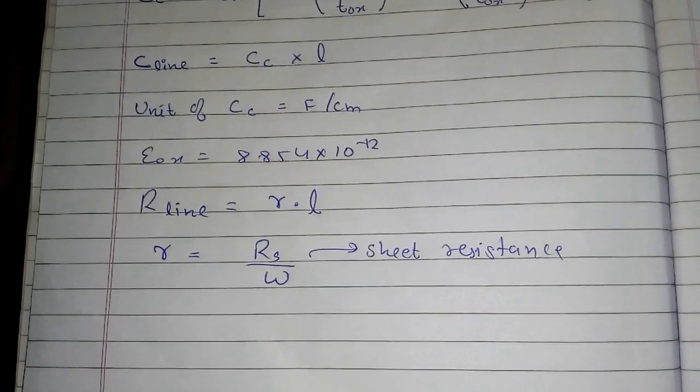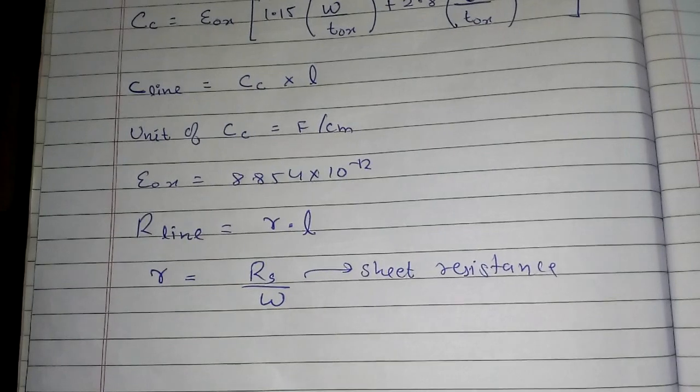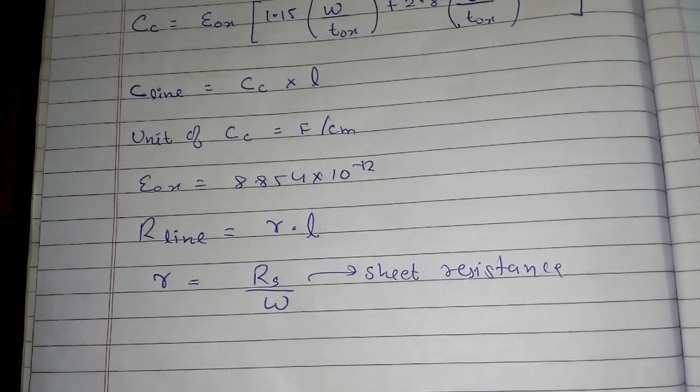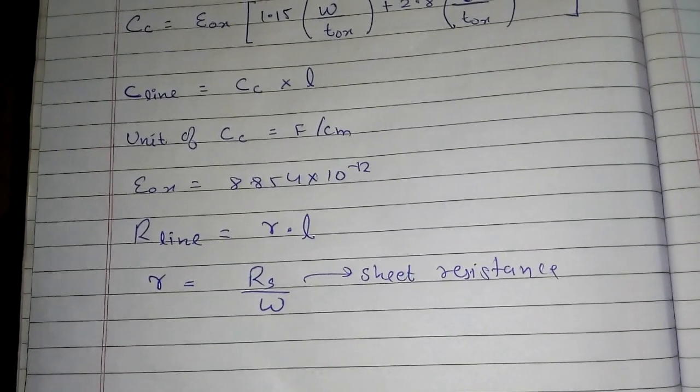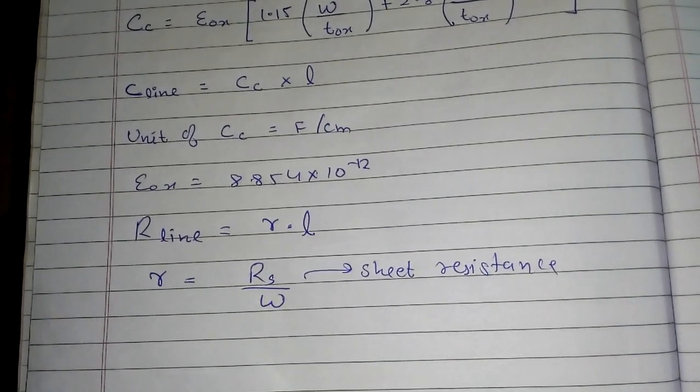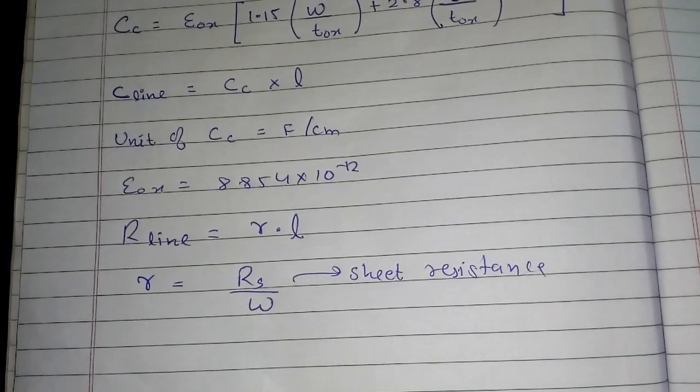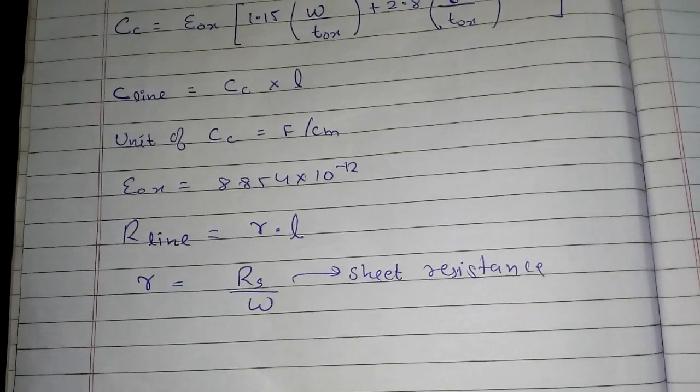But understand this in a simple term: when you make a CMOS, obviously there are metals used, and these metals will have some internal resistance. These internal resistances will also give rise, and there will be also actually internal capacitance. So in this, we are finding those internal capacitances and internal resistances.